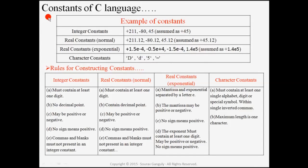Now come to the next point — what is a constant of C language? Constant means a value that is fixed and will not change throughout the program. For example, an integer constant: 45 is an integer constant. If no sign is present, we assume it is plus 45. Similarly, minus 80 and plus 211 are all integer constants.